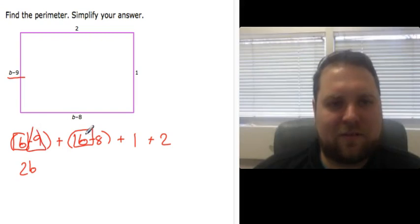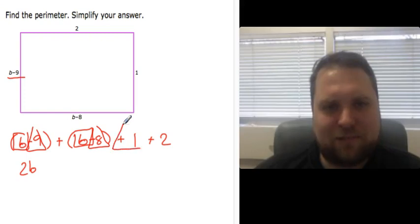And then I'm going to look for all my constant terms, and there I have them. Negative 9 plus negative 8 is going to give me negative 17. Negative 17 plus 1 is negative 16. And plus 2 is negative 14.